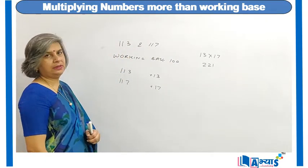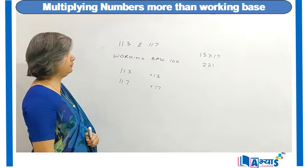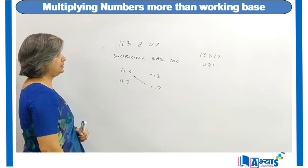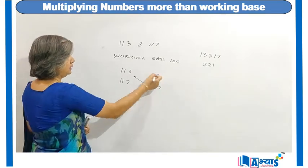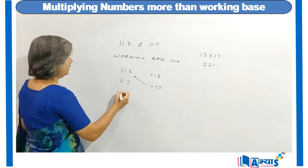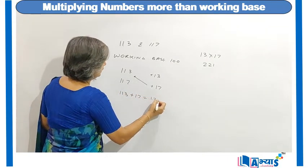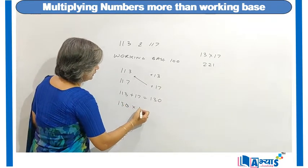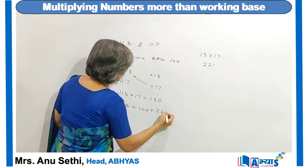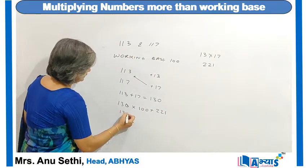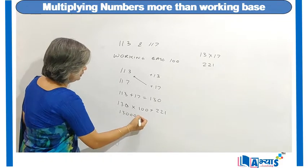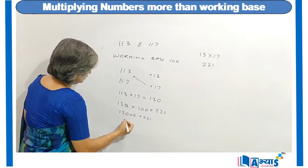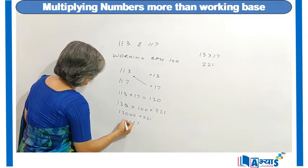So, 13 multiplied by 17 gives 221. Now I will perform diagonal addition — that means I will add 17 to 113, or I can add 13 to 117. Adding 113 plus 17, I get 130. I will then multiply 130 with the working base 100 and add 221.